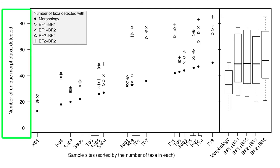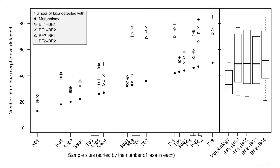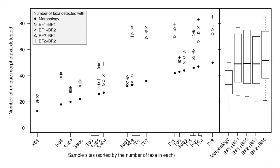This figure shows the amount of taxa detected with morphology or with the different primer combinations for all 18 sample sites. For DNA-based identifications, we count the number of taxa identified using reference databases — referred to as morphotaxa. Across all samples and all primer combinations, the DNA-based methods always identified more taxa than morphology. Overall, DNA-based methods identified roughly 60% more taxa per sample than morphology-based methods.